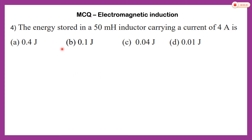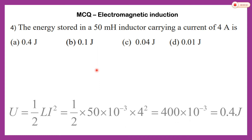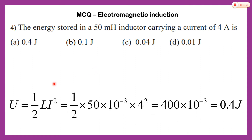The energy stored in a 50 millihenry inductor carrying a current of 4 amperes — you have to find the energy stored in the inductor. The formula given in the book is: the energy stored in an inductor U is equal to half L into I squared. We can solve this problem directly using this formula.